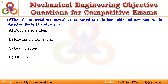Question 1. When the material becomes old, it is moved to the right-hand side and new material is placed on the left-hand side in: A. Double Area System, B. Moving Division System, C. Gravity System, D. All the above.